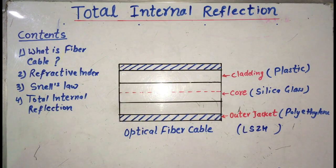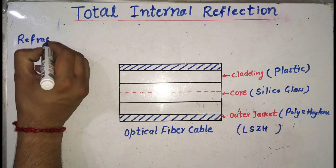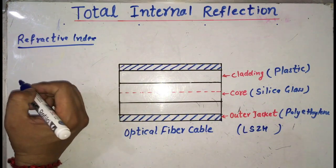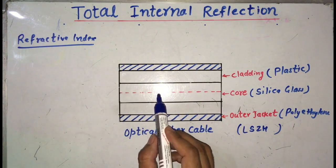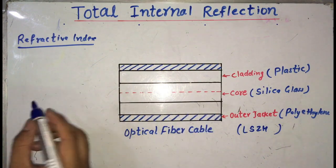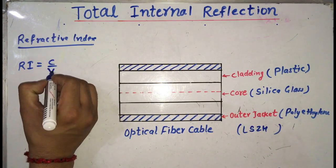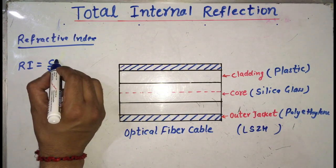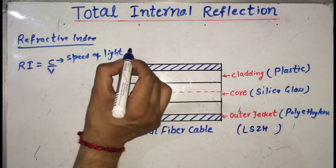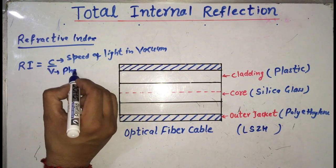Let us understand what the refractive index is. The refractive index of any material is a dimensionless number that tells us how fast light will travel through a material with respect to the speed of light in vacuum. We can calculate the refractive index — let us say it is Ri — using the formula: Ri = C / V, where C is the speed of light in vacuum and V is the phase velocity of light in the medium.